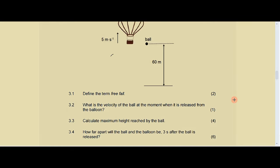In physical science, when they write 'what is,' that means they're looking for the magnitude, and most of the time you'll find it right there on your diagram or in the statement. So that's all you needed to write: five meters per second. Then 3.3 says: calculate the maximum height reached by the ball.